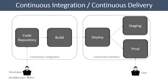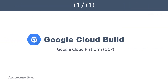An example of an event would be a person checking in code into the code repository, and as a result, a build might be initiated. All of this put together is called a CI/CD pipeline. Let us see how we can build a CI/CD pipeline with Google Cloud Build.